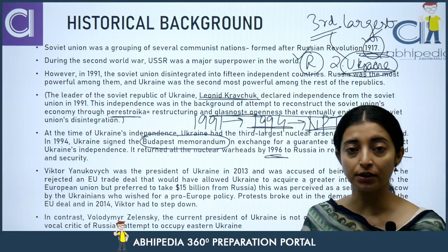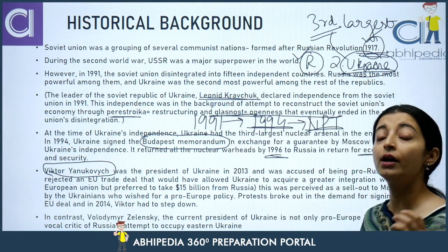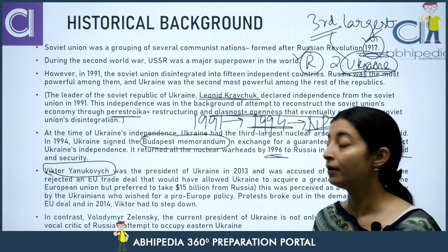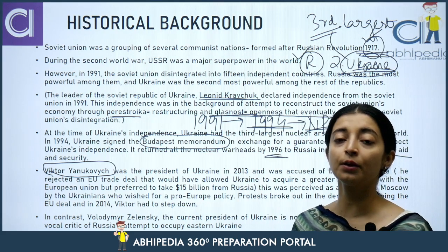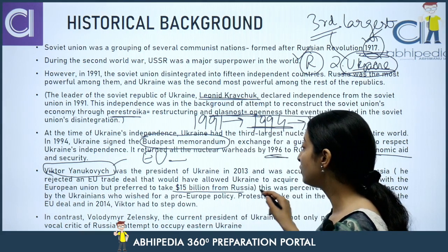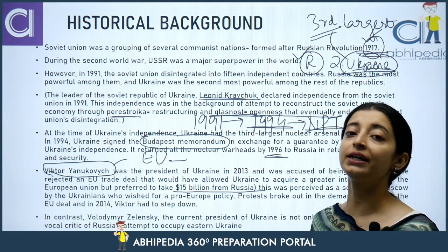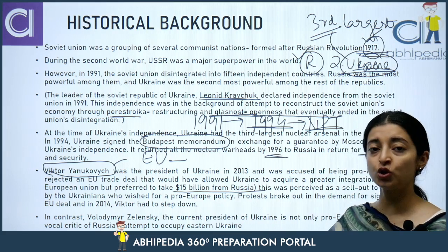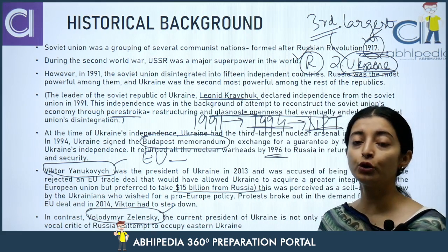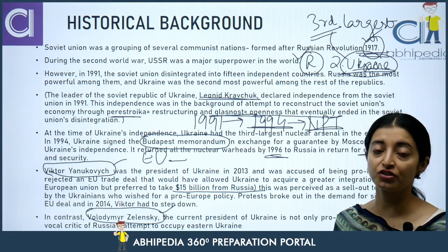Jumping to 2013 — Viktor Yanukovych was president of Ukraine at that time, and his policies were allegedly pro-Russian, tilted towards Russia. This is said because he rejected a European Union trade deal and instead accepted $15 billion in aid from Russia. This upset Ukrainians, protests broke out, and he eventually had to step down. The next president, who is still president today, is Volodymyr Zelensky — said to be pro-Europe and a vocal critic of Russia and Russian policies.